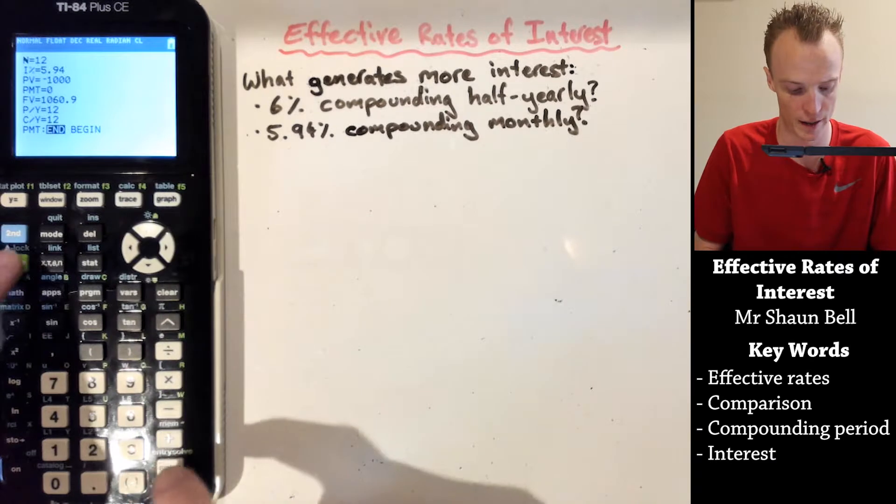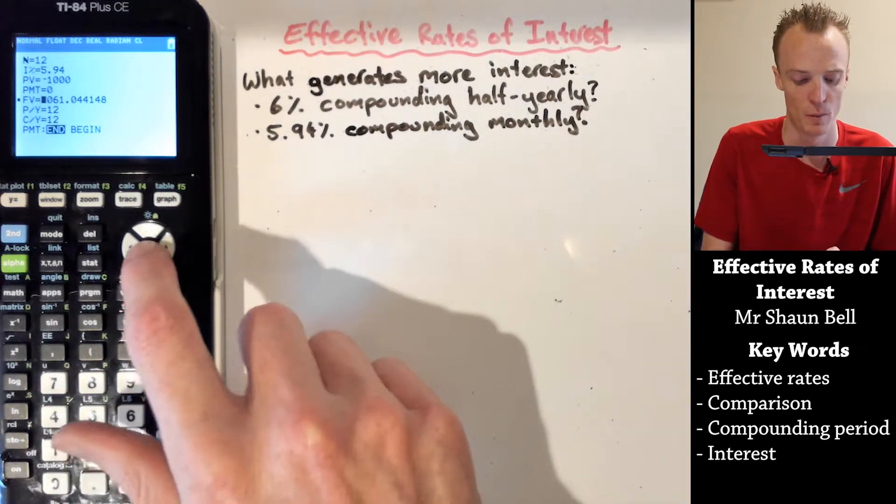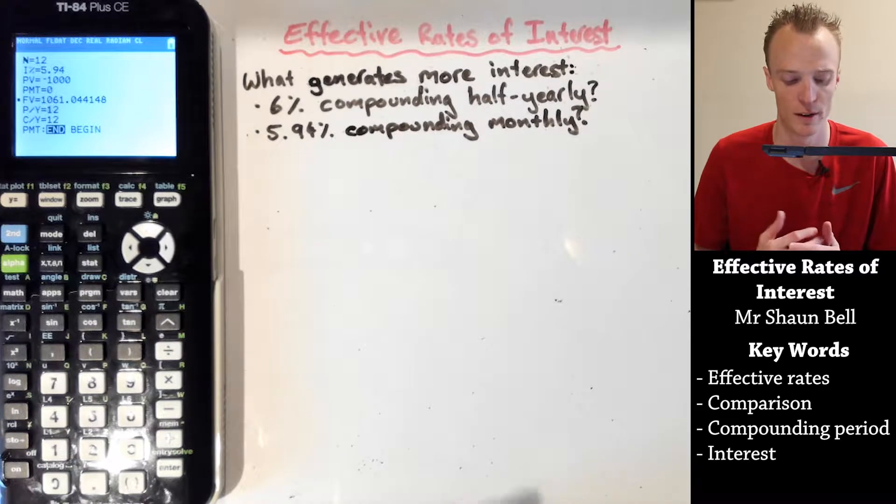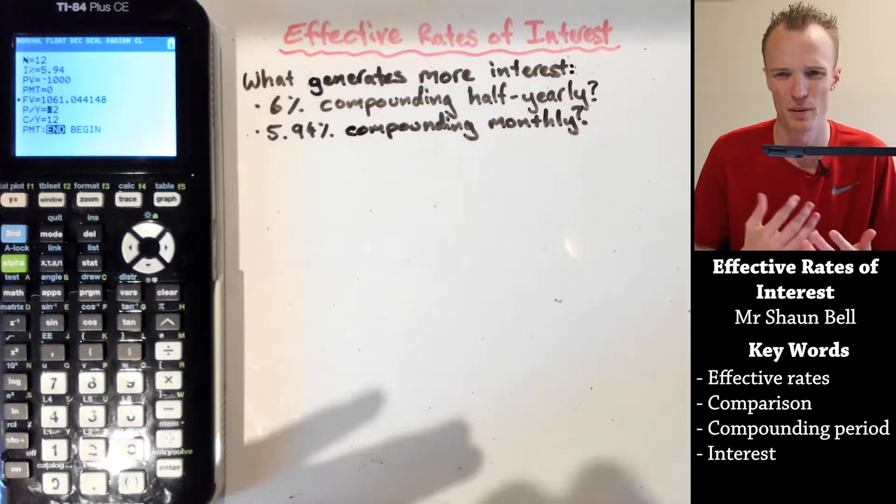Now when we calculate that future value, we find it to be just slightly more at $1,061 and approximately $0.04.